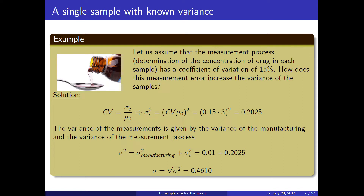Now let us complicate the problem a bit. Let us assume that to measure the concentration, we have a machine that has a coefficient of variation of 15%. We are trying to measure something on the order of 3 mg/mL. The coefficient of variation is defined as the standard deviation divided by the mean, so we can solve for the variance. The variance of our observations is not only the manufacturing variance, but also the variance of the measurement.